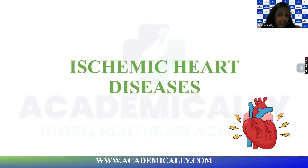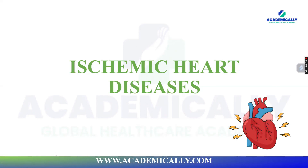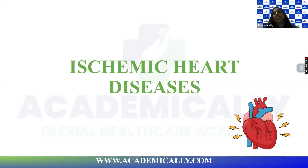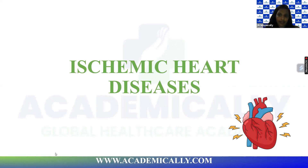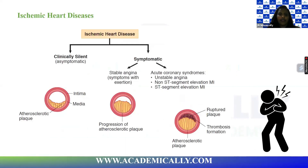When we come into ischemic heart disease — what is ischemia? It means less oxygen supply. If any organ in the body is getting less oxygen, we call it ischemia. So ischemic heart disease is when oxygen supply is less for the heart. Ischemic heart disease can be differentiated as asymptomatic and symptomatic. We mainly discuss symptomatic ischemic heart disease, which is either stable angina or acute coronary syndrome.